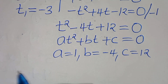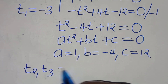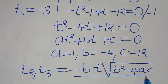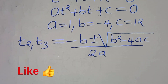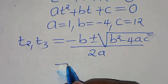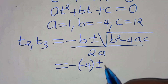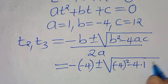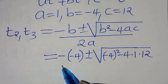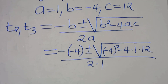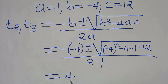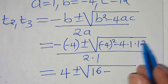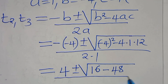Applying the quadratic formula, t₂ and t₃ equal minus b plus or minus the square root of b squared minus 4ac, all divided by 2a. Substituting, we have minus (minus 4) plus or minus the square root of (minus 4) squared minus 4 times 1 times 12, all divided by 2 times 1. This gives 4 plus or minus the square root of 16 minus 48, divided by 2.